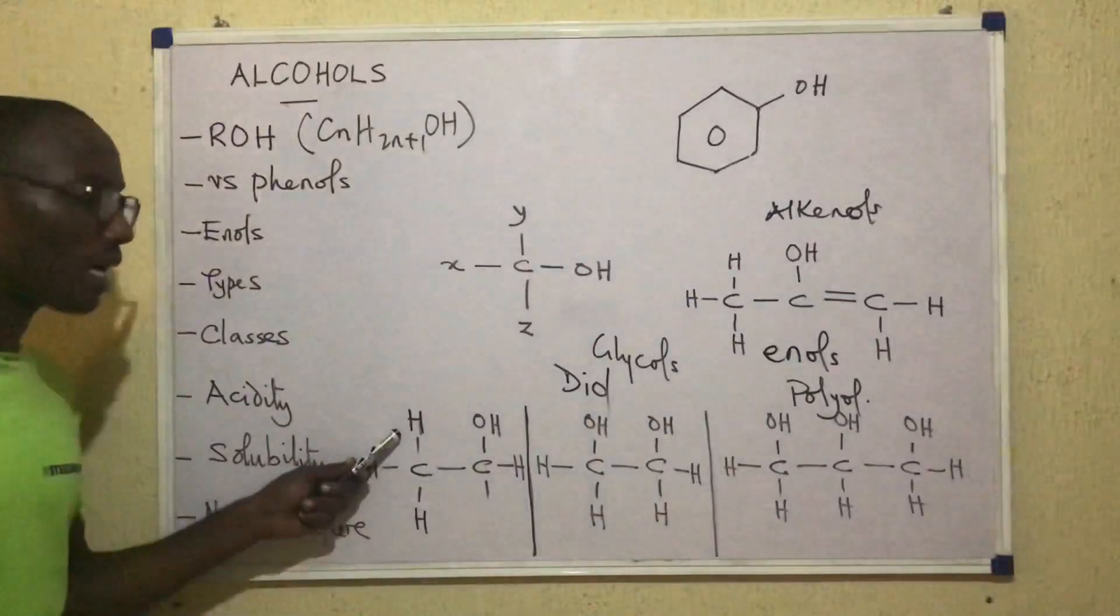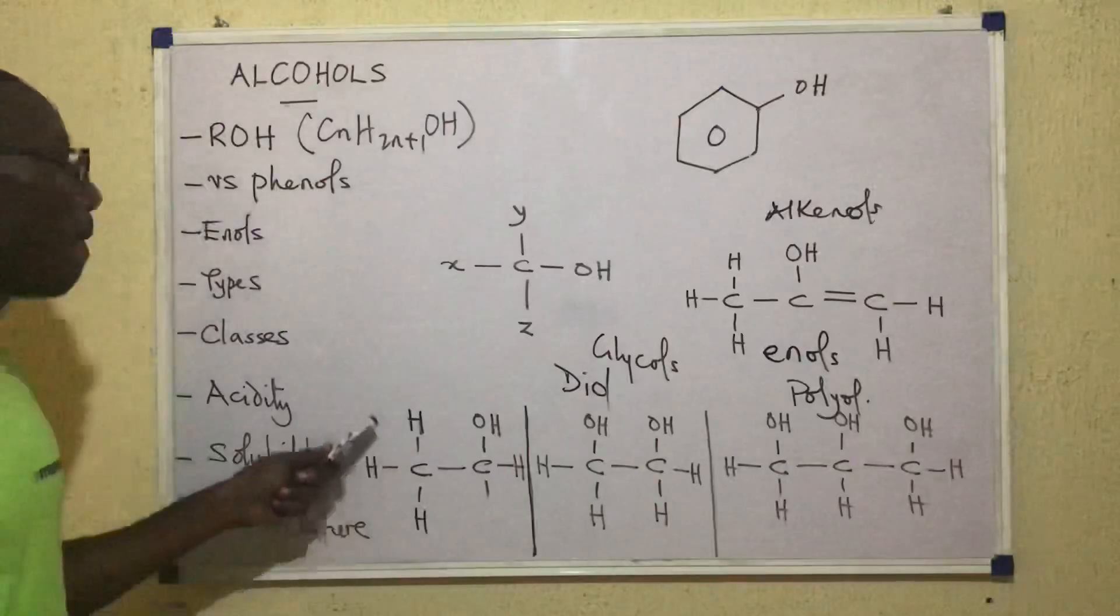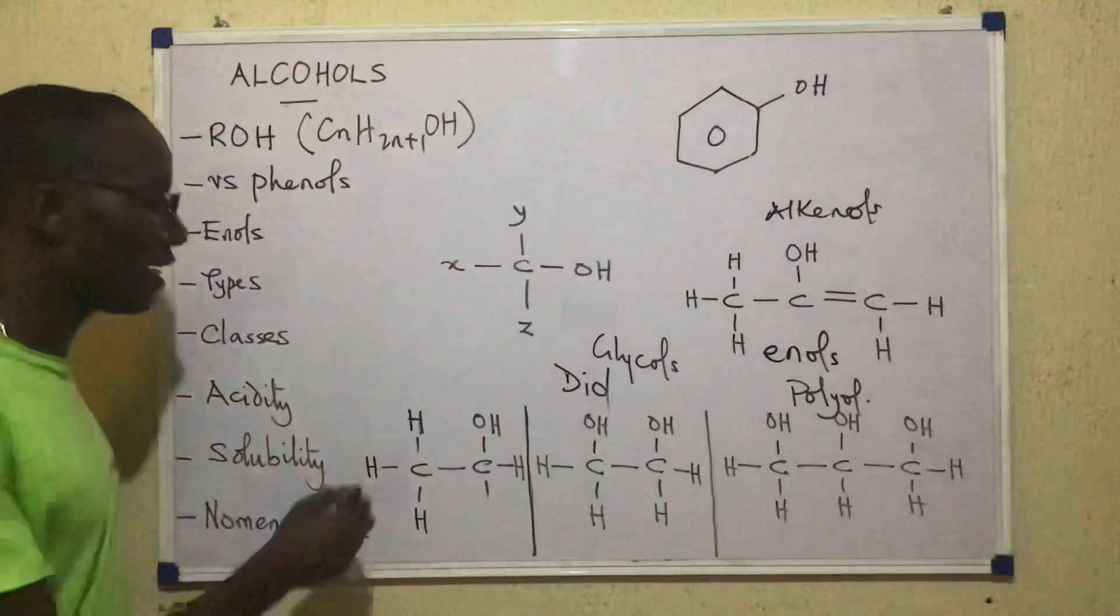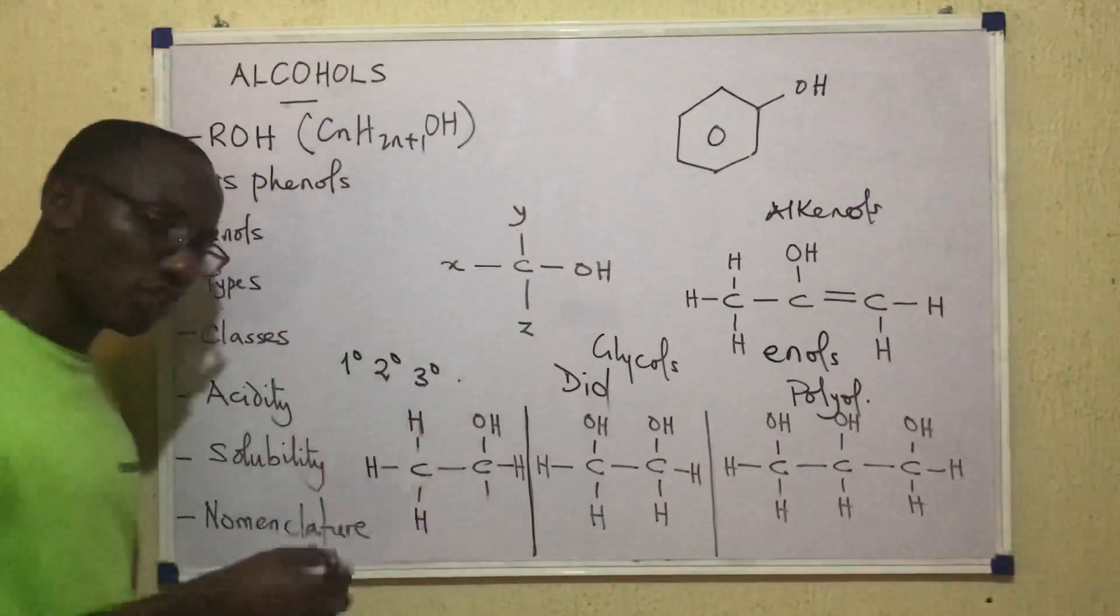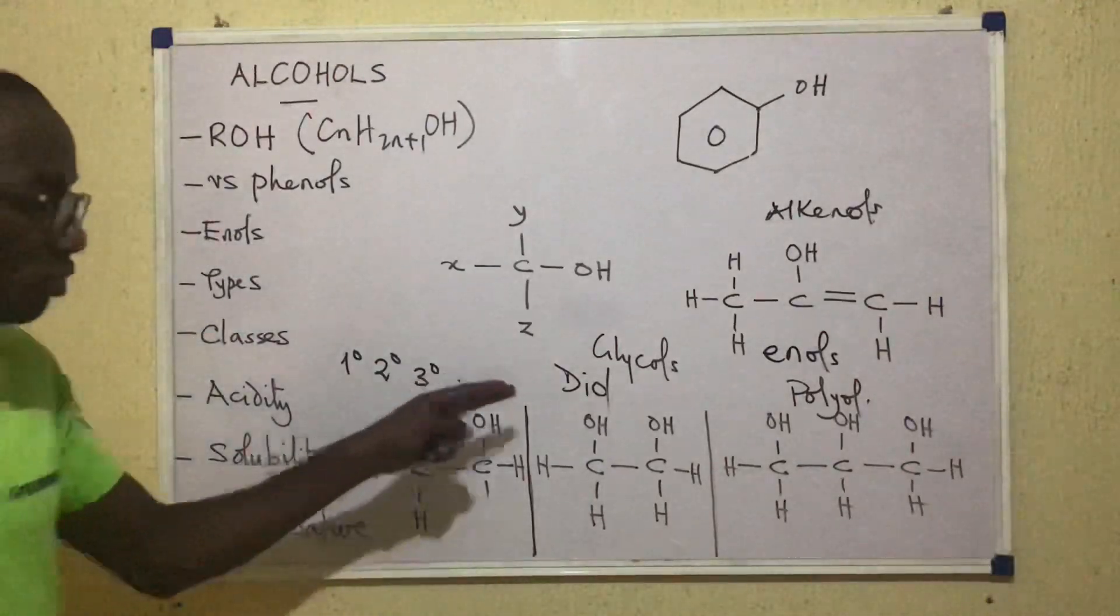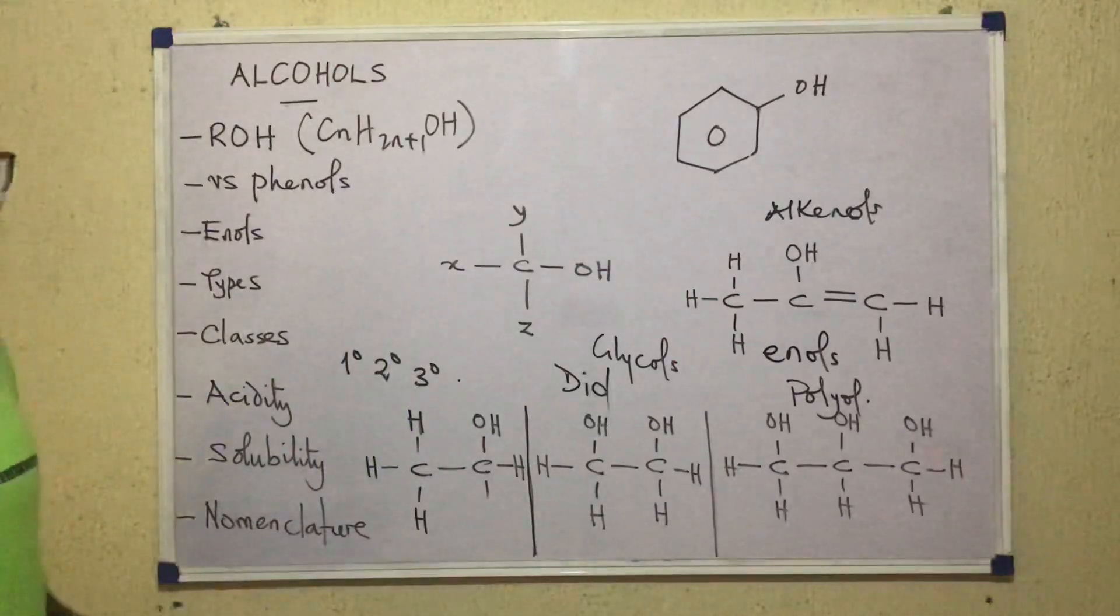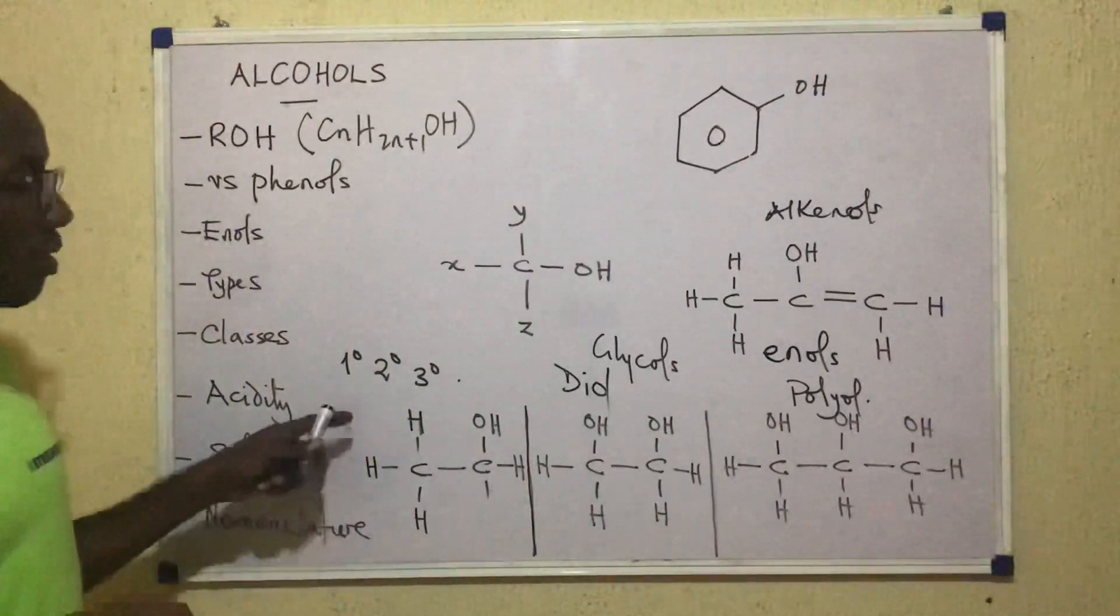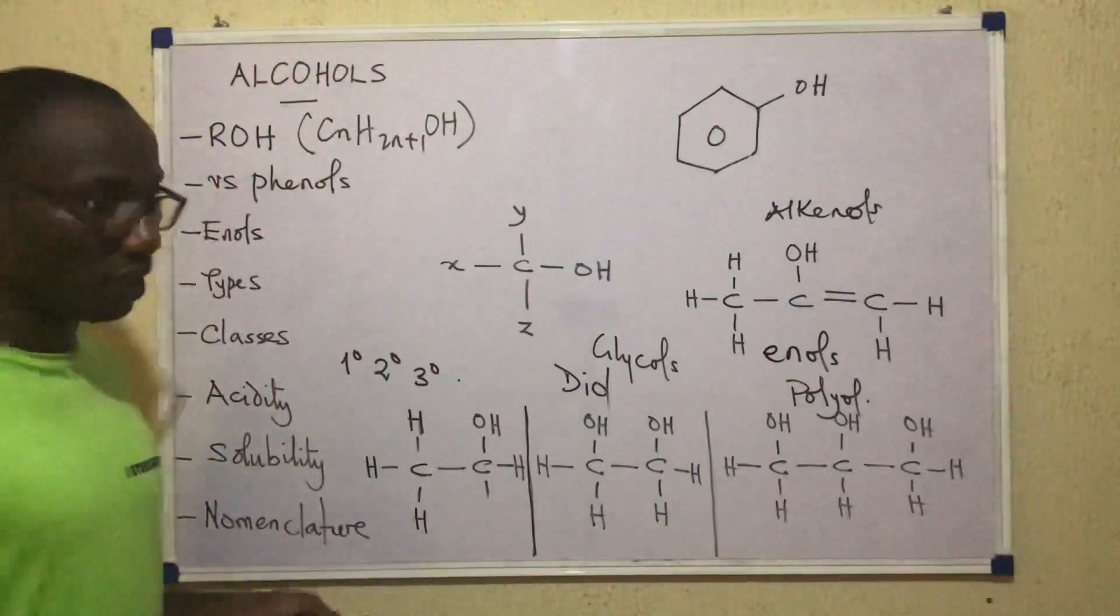Now for the monohydric alcohols, monohydric only, they can further be classified as primary, secondary, or tertiary. Now that does not apply to dihydrics or polyhydrics. So if an alcohol is dihydric, it will have no business with primary, secondary, tertiary. That only works for monohydric alcohols.